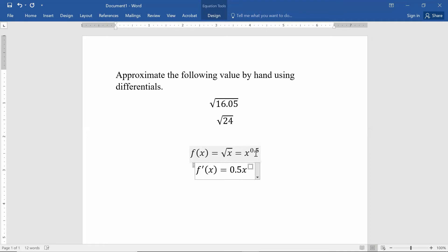Then the exponent can be lowered by 1. 0.5 minus 1 becomes negative 0.5. If you'd like to rewrite this, one easy way to rewrite this is to have x to the negative 0.5 be translated into the square root of x in the denominator, and you can leave 0.5 in the numerator. You could have also written this as one-half times 1 over square root of x.